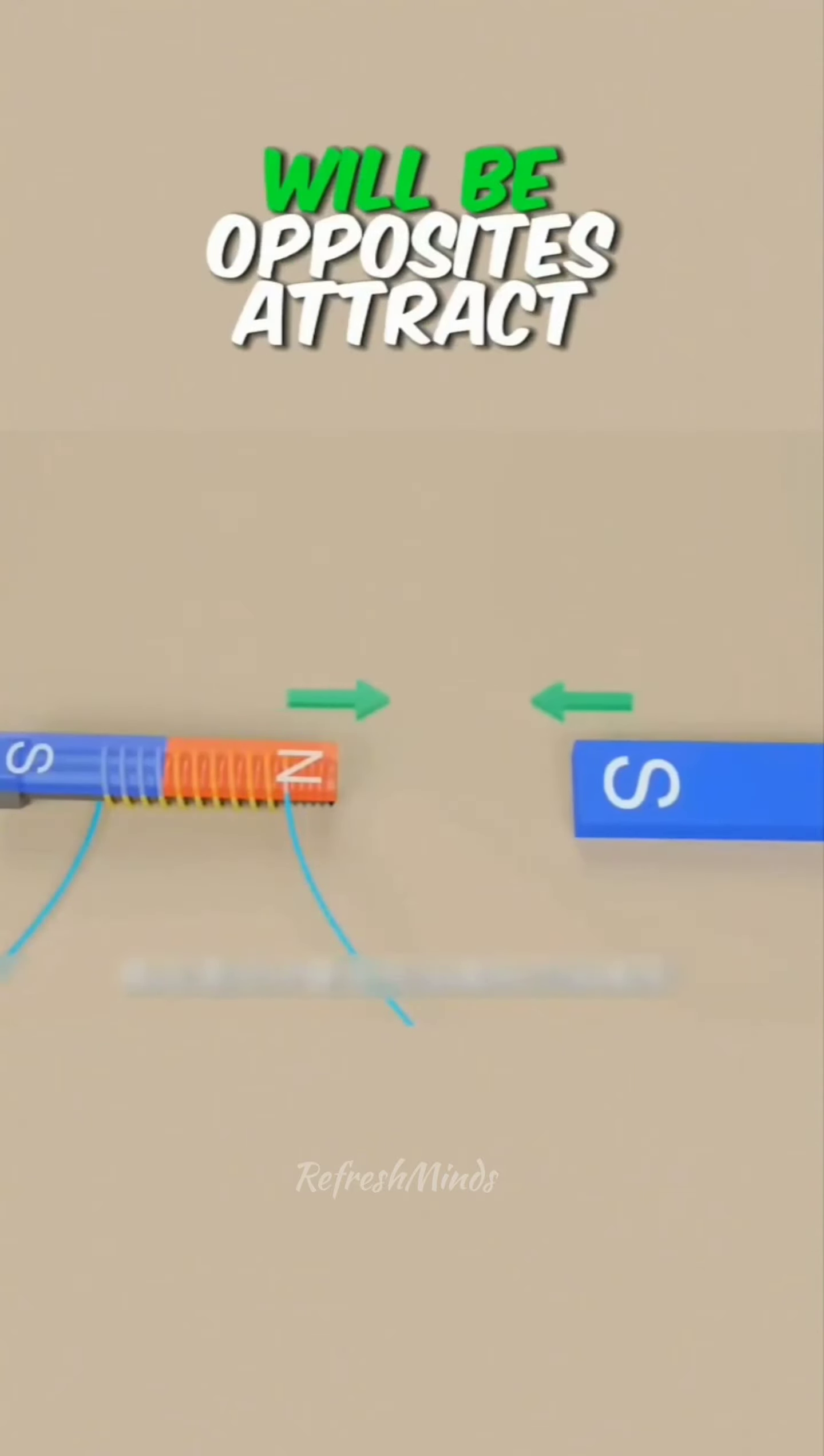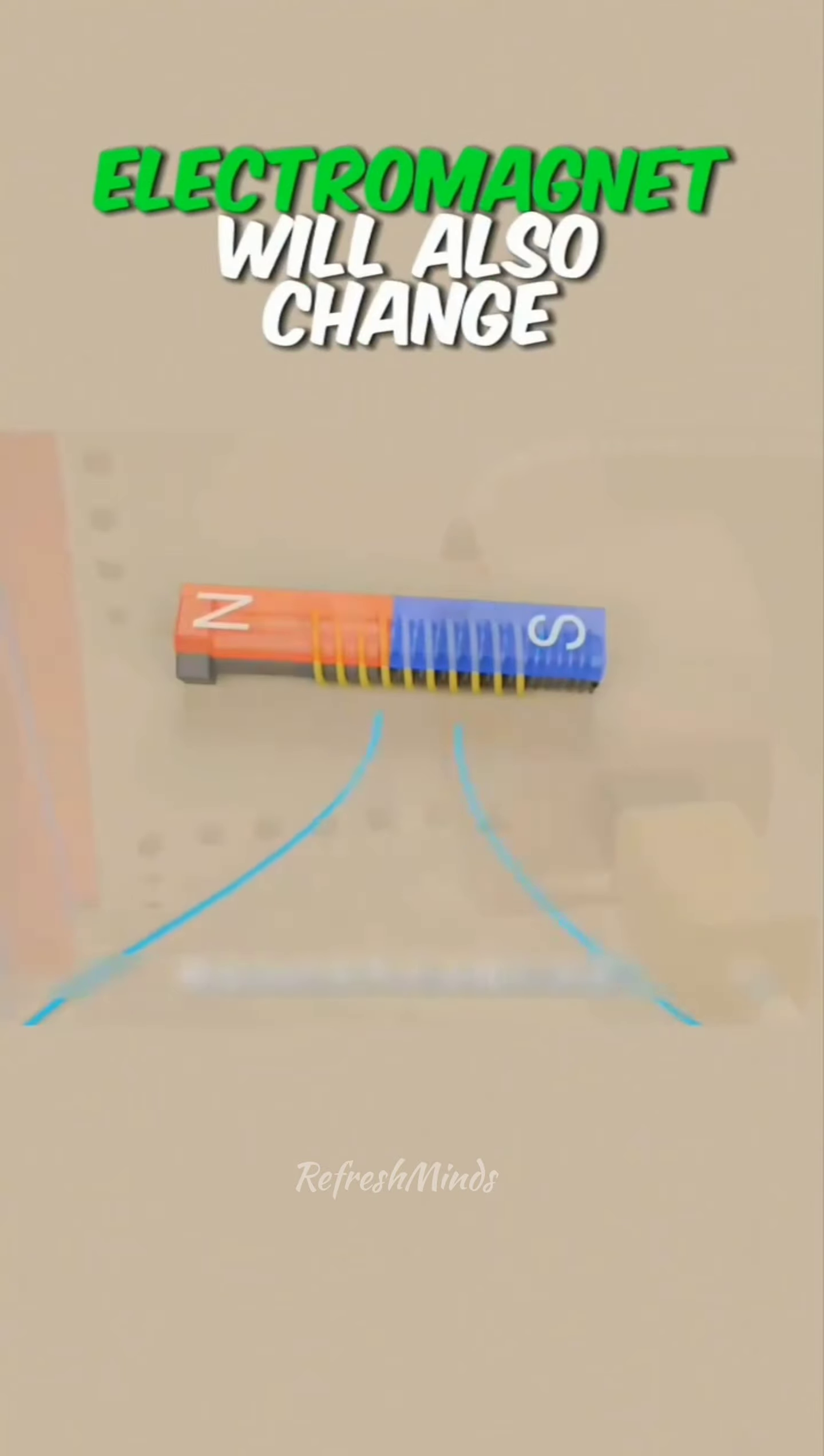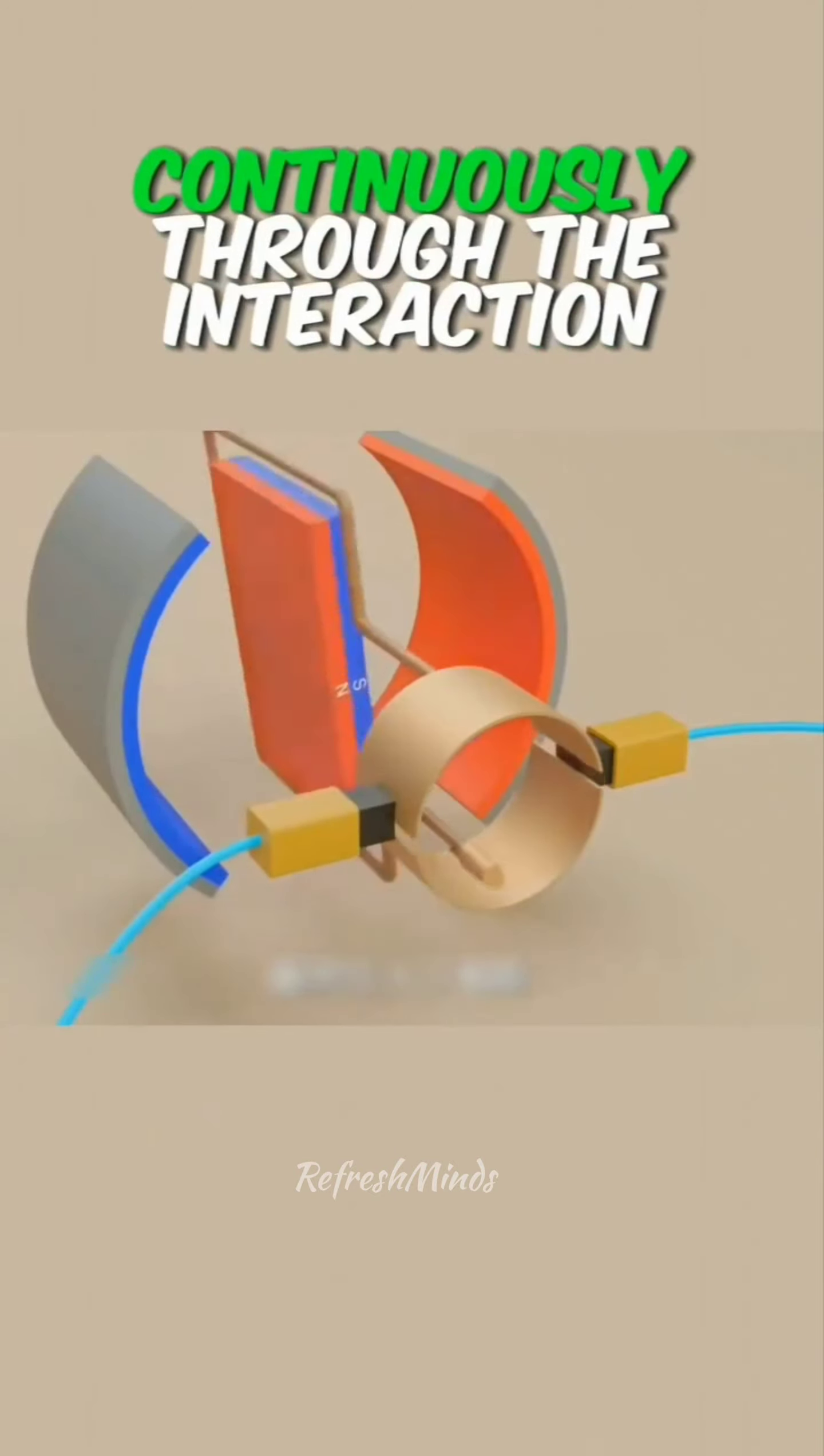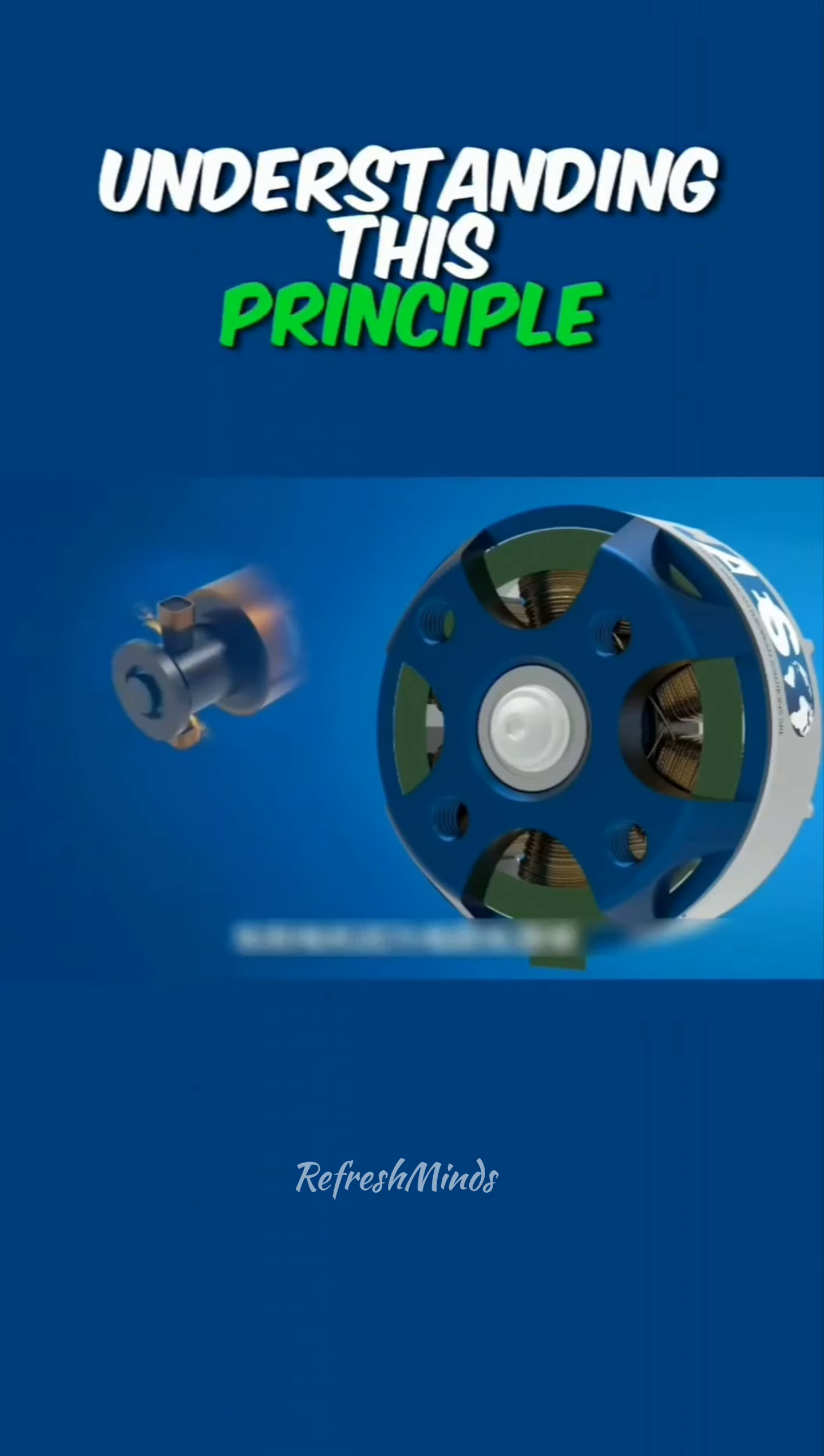Close to each other will be opposites attract, the same pole repel, and when changing the direction of the current, the polarity of the electromagnet will also change accordingly. In order to continuously change the direction of the current so that the electromagnet can rotate continuously through the interaction of the magnets and eventually introduce the brush, which is the brush motor.